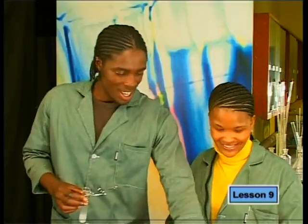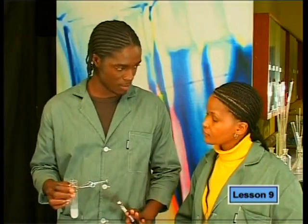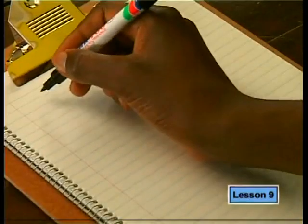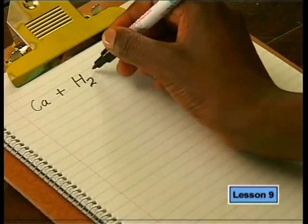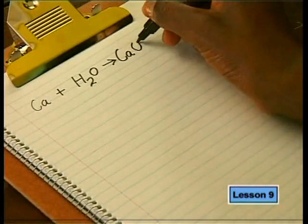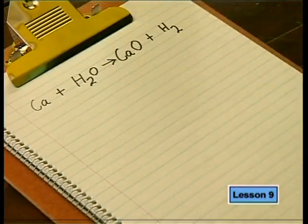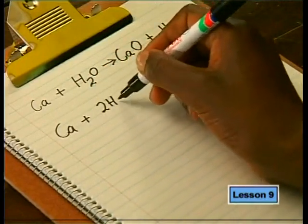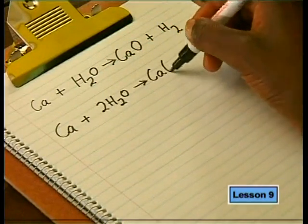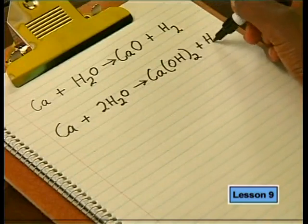This is where chemical calculations start paying off. If we write the two theoretical equations — for calcium and water forming calcium oxide and hydrogen: Ca + H₂O → CaO + H₂, and for calcium and water forming calcium hydroxide — we can use a known mass of calcium to predict the mass of each possible product. We then redo the experiment with that same mass, compare the actual product mass to our predictions, and determine which product formed.